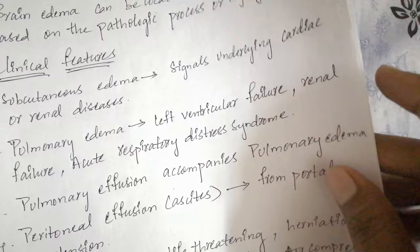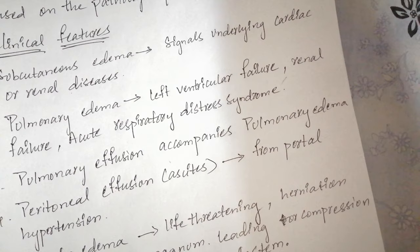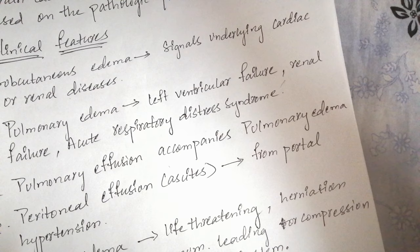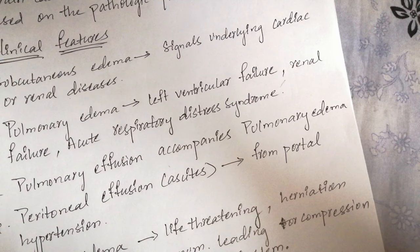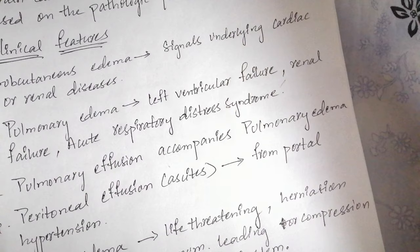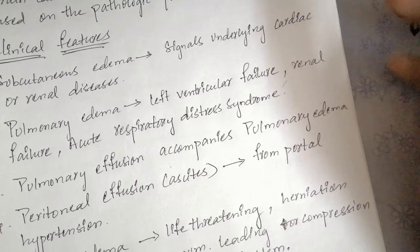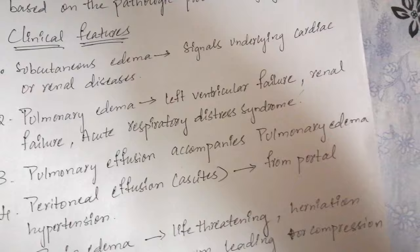Pulmonary edema is mainly due to left ventricular failure, renal failure, and acute respiratory distress syndrome. Not only does fluid collect in the alveolar septa around the capillaries and impede oxygen diffusion, but edema fluid in the alveolar spaces also creates a favorable environment for bacterial infection, leading to additional diseases. What may start as renal failure alone can lead to bacterial growth in the lungs, causing much more fatal complications.